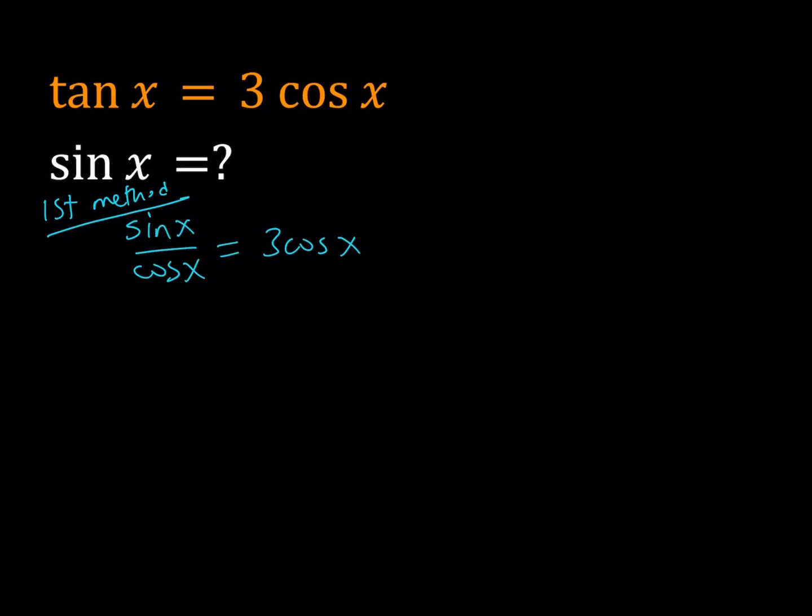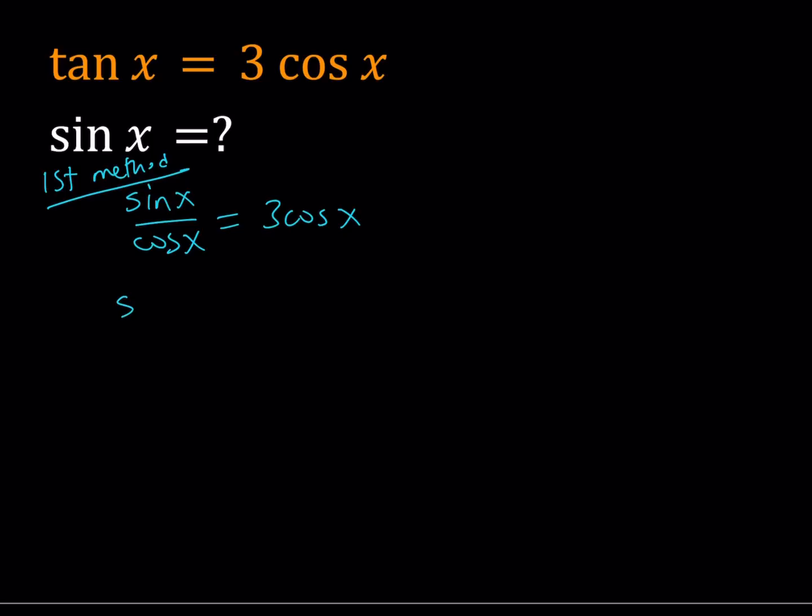And then using cross multiplication. Obviously we have to be careful about not making this undefined. So cosine x should not equal 0. And obviously if cosine x is equal to 0, this will not be satisfied because tangent and cosine can't be 0 at the same time. So from here we get sine x equals 3 cosine squared x.